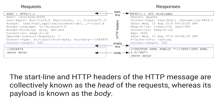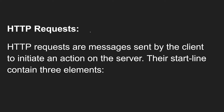Here you can see the typical HTTP message structure: the start line at the top, followed by HTTP headers such as host, user-agent, accept, and accept-language as request headers. For the response, you can see server type like Apache and content-type. Now let's look at the HTTP request. HTTP requests are messages sent by the client to initiate an action on the server.